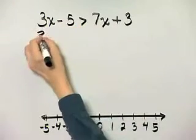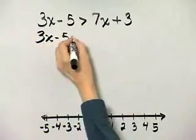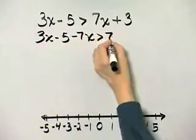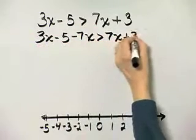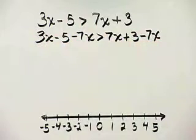So the left side, I have 3x minus 5. I'll subtract 7x. The right side, 7x plus 3. And I'll also subtract 7x.